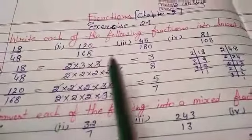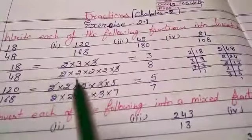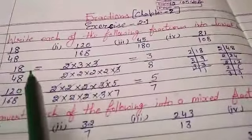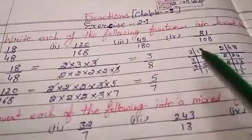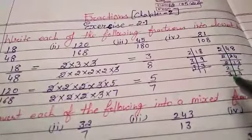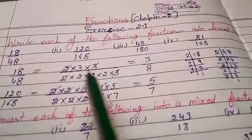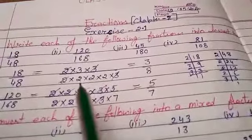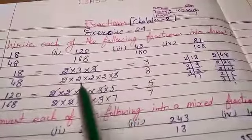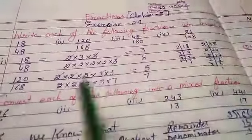I will answer the question using prime factorization method. The first question is 18/48. First make prime factors of 18 that are 2, 3, 3 and then 48 that are 2, 2, 2, 2, 3. Now cut common factor by common factor, then we are left with 3 in the numerator and 8 in the denominator. 3/8 is the lowest term.